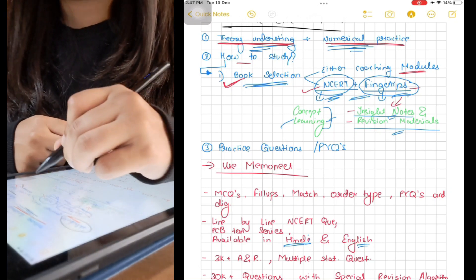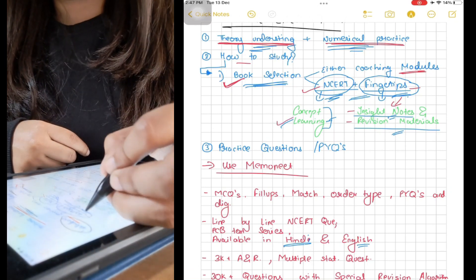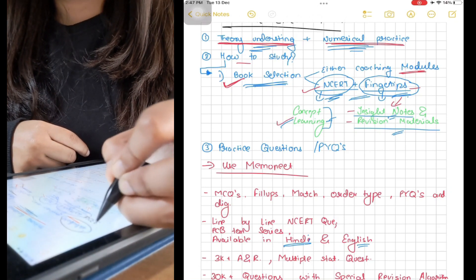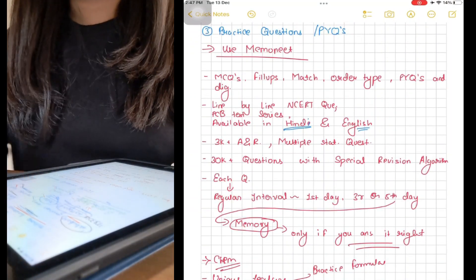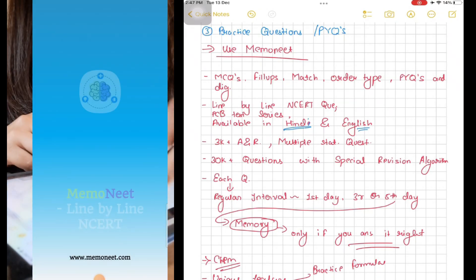If you don't have coaching modules, you can go for MTG's Fingertips and NCERT. In MTG's Fingertips book, you'll get notes and formula charts for revision. For concept learning, you have your NCERT. To practice questions, you can use this app called Memo NEET. In this app, you'll get MCQs, fill-ups, match order type, previous year, and diagram-based questions.